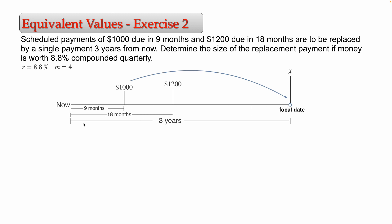The $1,000 is at nine months from now, and the focal date is three years, which is 36 months from now. So 36 minus 9 equals 27 months between the scheduled date and the focal date. Since three months equals one quarter, 27 divided by 3 gives us nine quarters. So n equals 9 for the $1,000. Another way to compute this is 27 over 12 multiplied by 4, which also equals 9.